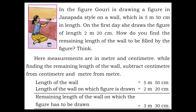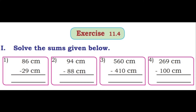Length of the wall = 5 meter 50 centimeter. Length of the wall on which the figure is drawn = 2 meter 20 centimeter. Remaining length: 0 minus 0 is 0, 5 minus 2 is 3, 5 minus 2 is 3. So remaining length = 3 meter 30 centimeter. Now let's see Exercise 11.4, first section.